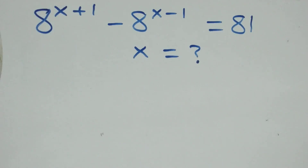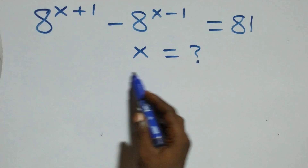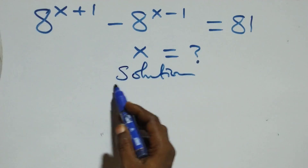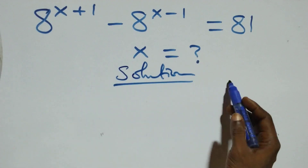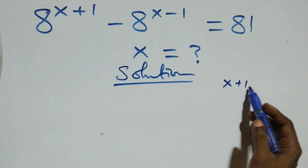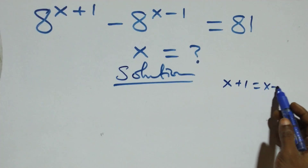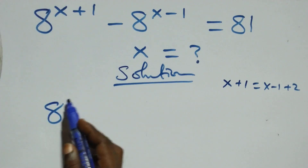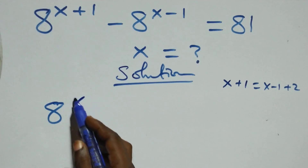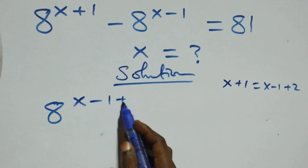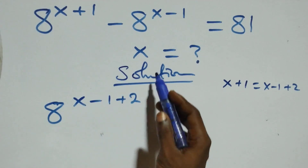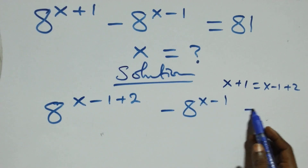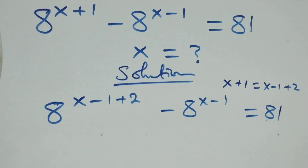Hello, you are welcome. How to solve this nice exponential equation. From what we have here, we can express x plus one as the same thing as x minus one plus two. This becomes 8 raised to power x minus one plus two, minus 8 raised to power x minus one, equals 81 on this side.